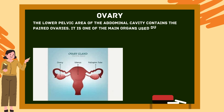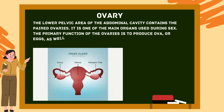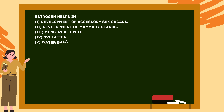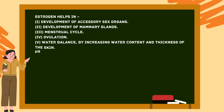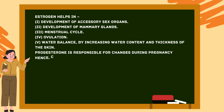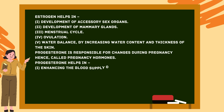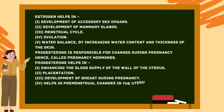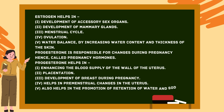Next is the ovary. The paired ovaries are located in the lower pelvic area of the abdominal cavity. The primary function of the ovaries is to produce ova (eggs) as well as the hormones progesterone and estrogen. Estrogen helps in the development of accessory sex organs, development of mammary glands, the menstrual cycle, ovulation, and water balance by increasing water content and thickness of the skin. Progesterone is responsible for changes during pregnancy and is hence called the pregnancy hormone. Progesterone helps in enhancing blood supply to the uterine wall, placentation, breast development during pregnancy, premenstrual changes in the uterus, and promotion of retention of water and sodium salts by affecting kidney functions.